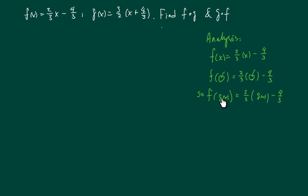Then f of g of x - whatever I put in there, it would be two-thirds of whatever g(x) is, minus four-thirds. And also in this problem, when we have the shorthand f circle g, this is by definition f of g of x.